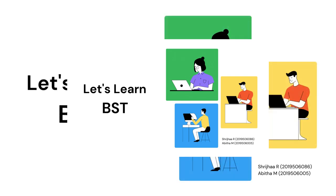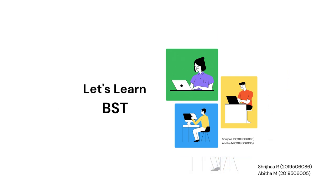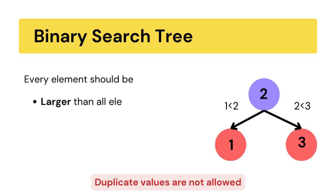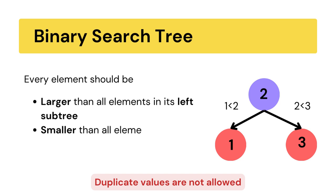Hey guys, let us learn binary search tree. What is a binary search tree? Binary search tree is a type of binary tree. In a binary search tree, every element should be greater than its element in the left subtree and smaller than its element in the right subtree.